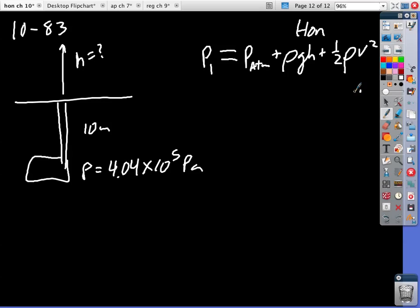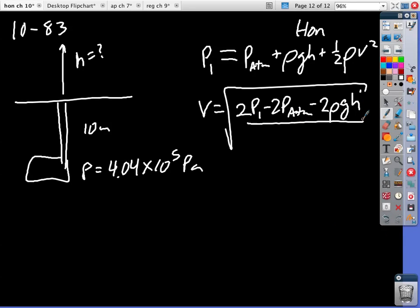So we're going to get V is equal to the square root of 2P1 minus 2P atmospheric minus 2 rho GH all over the density of the water.